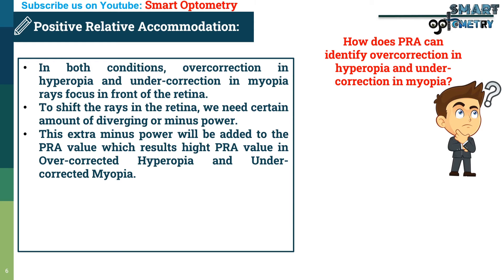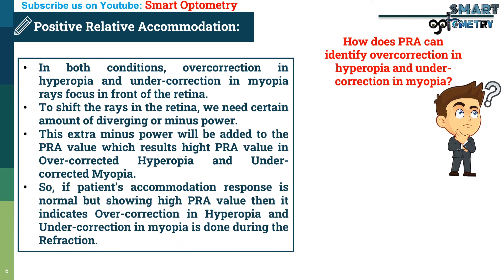So if a patient's accommodation response is normal but showing a high positive relative accommodation value, it indicates that over-correction in hypermetropia or under-correction in myopia has been done during the refraction.